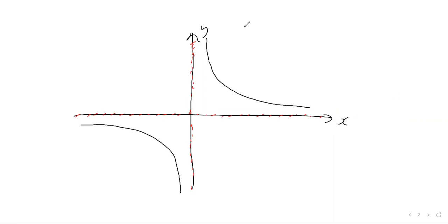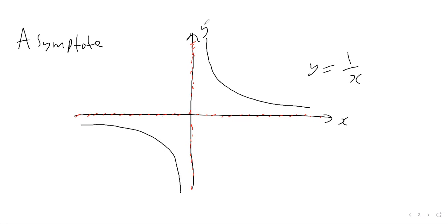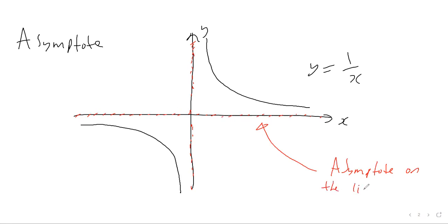A term you may not have seen before is 'asymptote.' An asymptote is a line that a function or its graph does not cross. For the graph y equals 1 over x, we have two asymptotes: one on the x-axis, which is the line y equals zero, shown here as a red dotted horizontal line, and one on the y-axis, which is the line x equals zero.